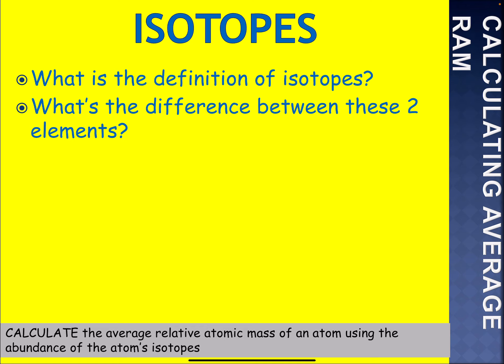What is the definition of isotopes, and what's the difference between these two elements?